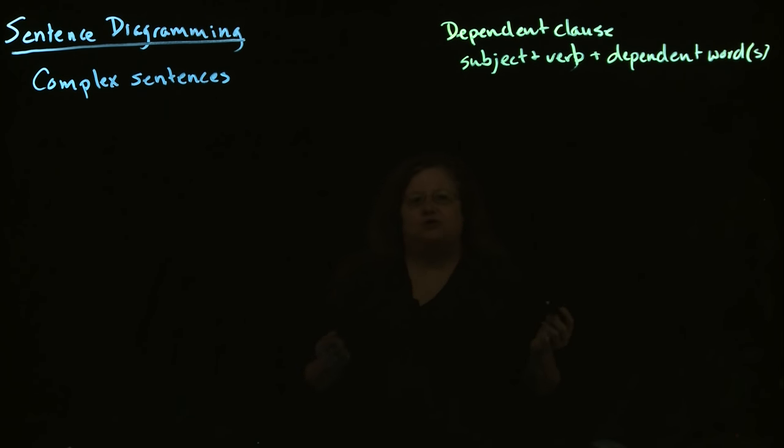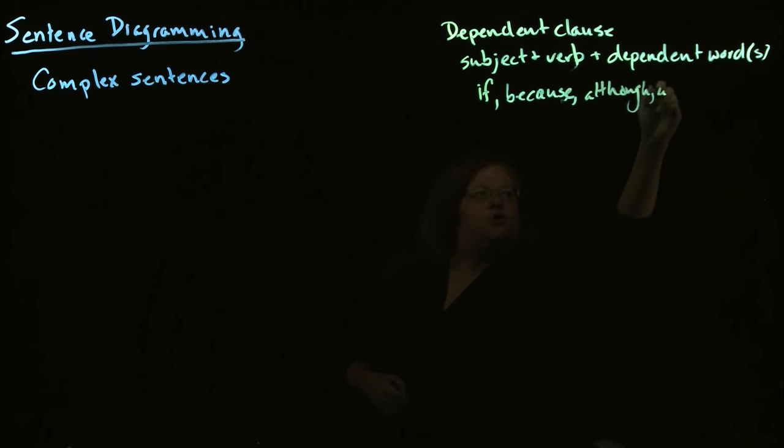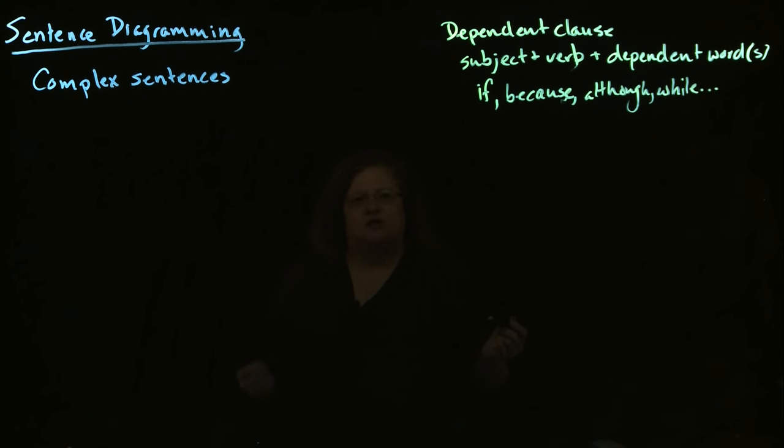So we're looking at two categories of dependent words. We have subordinating conjunctions, which are things like if, or because, or although, or while, those sorts. And another kind of subordinate word or dependent word is a relative pronoun such as that, or which, or who.